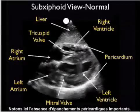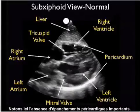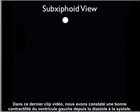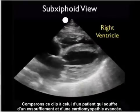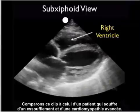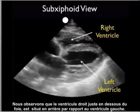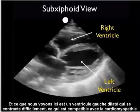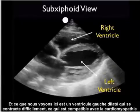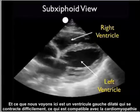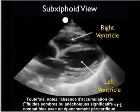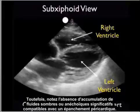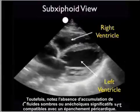Note the absence of any significant pericardial effusions in that clip. We also noted good contractility of the left ventricle from diastole to systole. Let's contrast that clip to this one from a patient who presented with shortness of breath and advanced cardiomyopathy. We see the right ventricle just below the liver, anterior to the left ventricle. What we see here is a poorly contracting and dilated left ventricle consistent with a cardiomyopathy heart. However, note the absence of any significant dark or anechoic fluid collections consistent with a pericardial effusion.